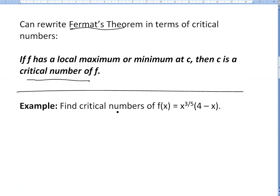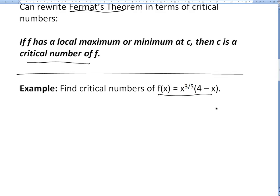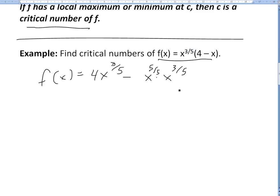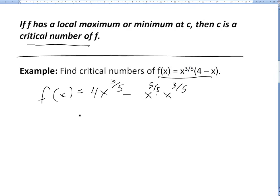The example I want to go over is: find the critical numbers of f(x) = x^(3/5) times (4 minus x). To find the critical numbers, first we find the derivative. Let's rewrite f(x) by multiplying it out to make differentiation easier: f(x) = 4x^(3/5) minus x times x^(3/5). Since x is the same as x^(5/5), adding the exponents gives f(x) = 4x^(3/5) minus x^(8/5).